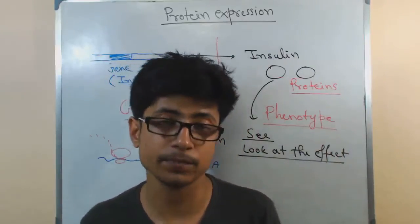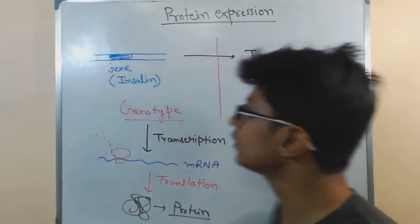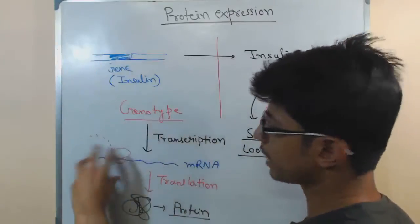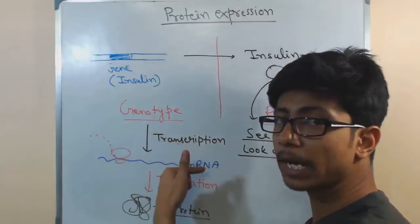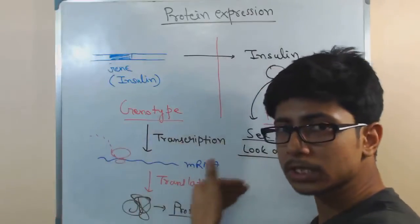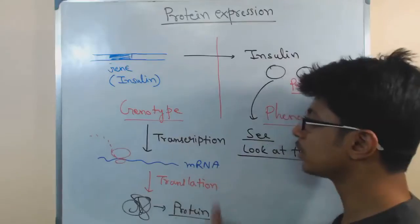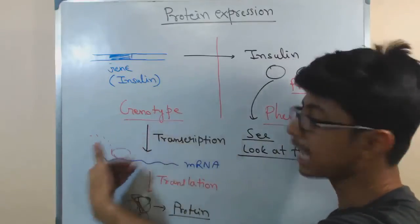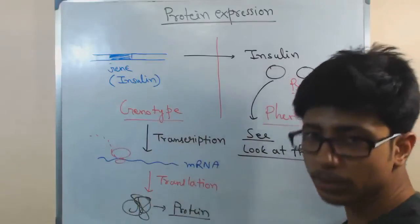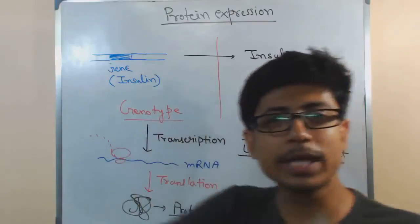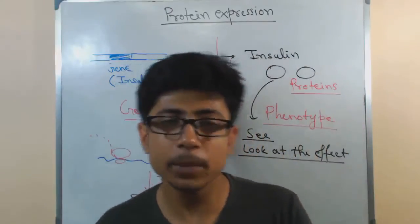So once the mRNA is produced and the ribosome slides along from five prime to three prime, they continuously produce proteins. And actually the preparation of mRNA transcription and production of protein, the translation, occurs simultaneously in case of prokaryotes. While in eukaryotes the scenario is different.